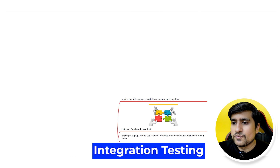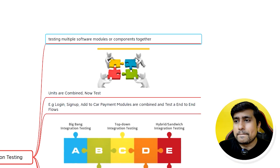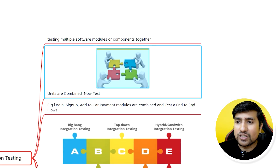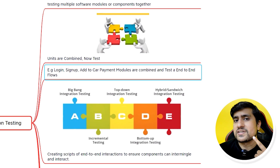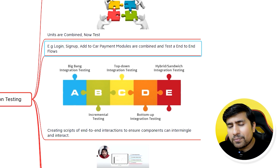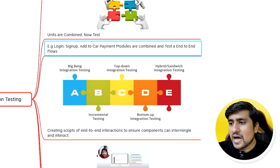First, let's jump into integration testing. It's a type of testing where multiple software modules are combined into a single unit and tested together. For example, we have a login page, a sign-up page, an add-to-cart page, a payment page, and a thank-you page — all separate modules. When we combine them into a proper e-commerce website and test that combined system, it's called integration testing.